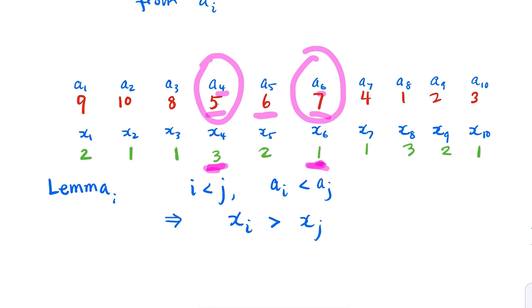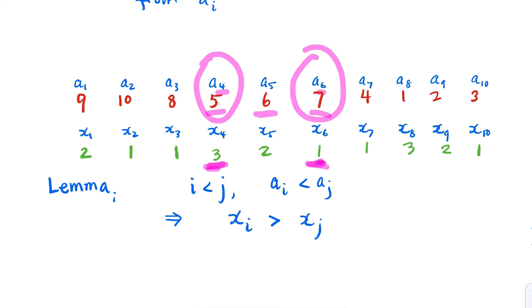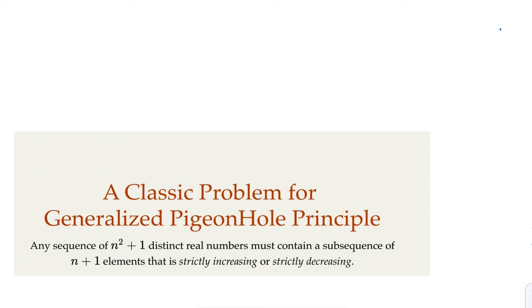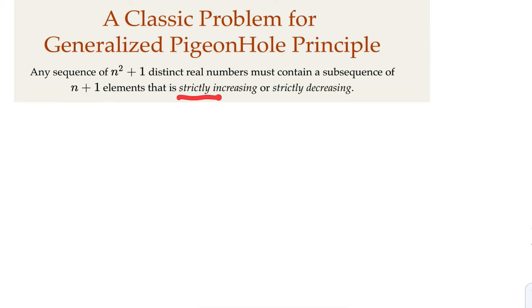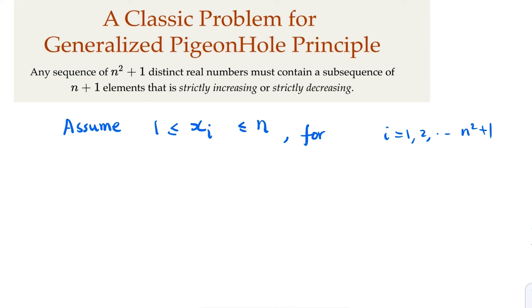Think about this property — pause the video if you want. Now let's start the formal proof. The statement claims there exist n plus 1 elements that are strictly increasing. We prove by contradiction: assume all xi values are at most n for every i from 1 to n squared plus 1. In other words, we assume the strictly increasing subsequence of length n plus 1 does not exist. Then we'll show this forces the existence of a strictly decreasing subsequence of n plus 1 elements, using the generalized pigeonhole principle.